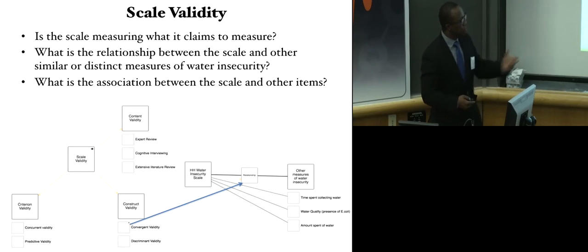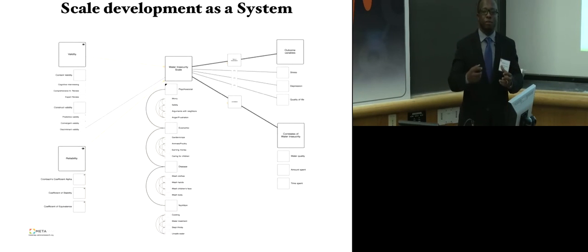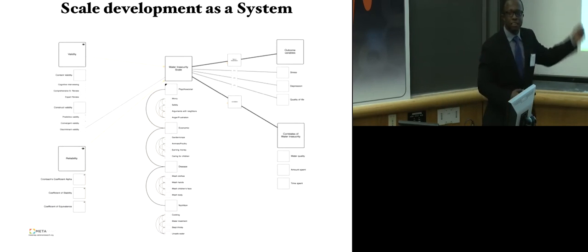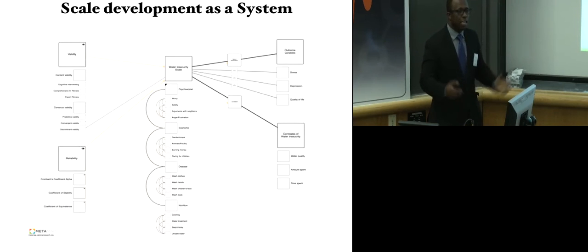And so when you take scale development as a bigger system, you would find that it is made up of parts. Parts where you would have to look at the items and how they relate with each other, and you also have to be able to draw out the different perspectives that come out of the items. But also, once that has been done, you also need to look at the validity of the items put together and its reliability.